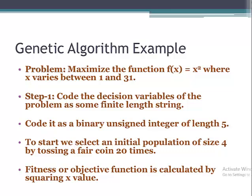Step one is to encode the decision variables of the problem as a finite-length string, coded as a binary unsigned integer of length 5. So any solution will be in the form of a string of length 5, which is the binary representation of the number. To start, we select an initial population of size 4 by tossing a coin 20 times.